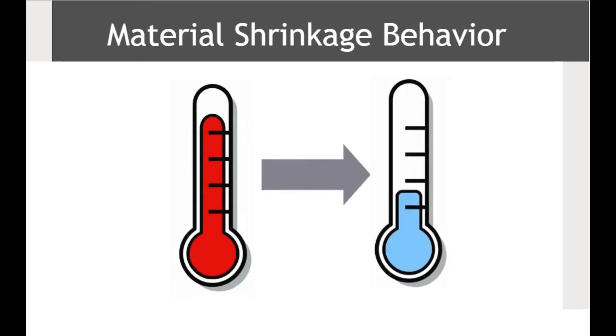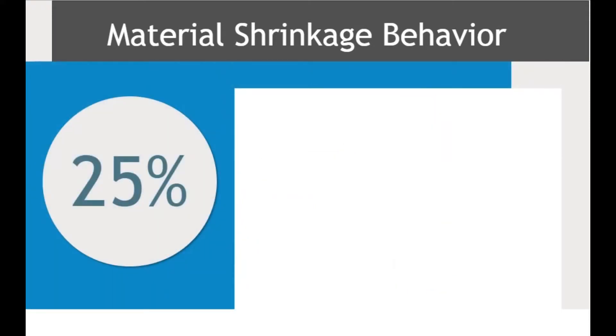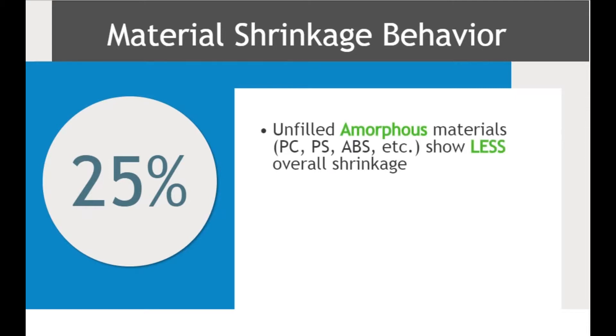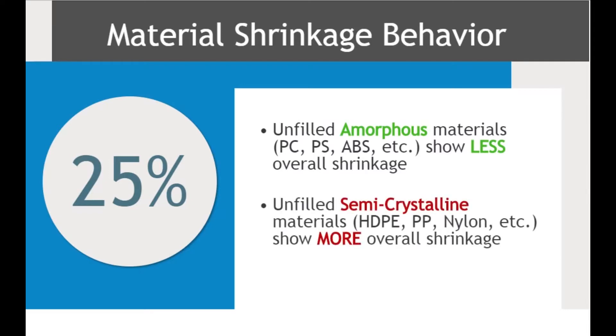The term shrinkage refers to the natural material shrinkage that occurs when plastics cool. Plastic can have a volumetric shrinkage of up to 25%. In general, unfilled amorphous materials like PC, PS, ABS, etc. show less overall shrinkage than unfilled semicrystalline materials like HDPE, PP, nylon, etc. A table of the most common materials and the range of linear shrinkages is available in your student materials.